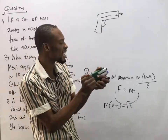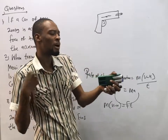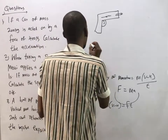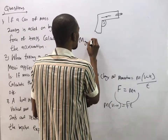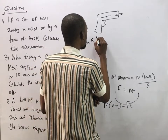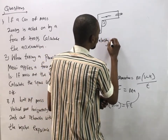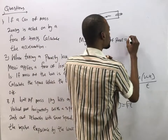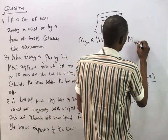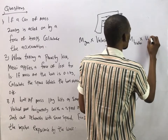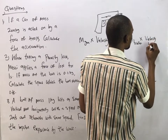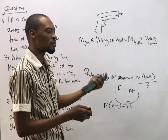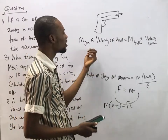The bigger the gun, the greater the momentum of the recoil. This means the mass of the gun times its recoil velocity equals the mass of the bullet times the velocity of the bullet. The total momentum in the system equals zero, and this obeys the law of conservation of momentum.